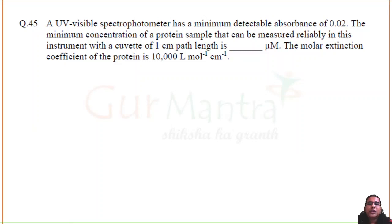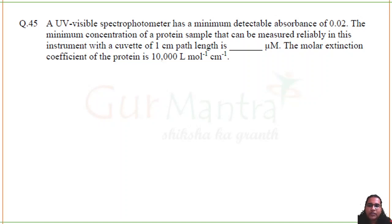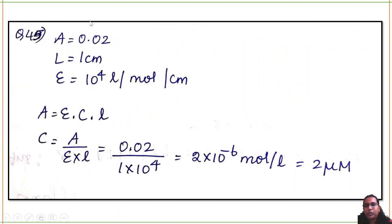Twenty-third question: a UV-visible spectrometer has a minimum detectable absorbance value A given. Path length = 1 cm, molar extinction coefficient = 10,000 L/mol/cm. Using Beer-Lambert law A = ε·c·l, substitute values and solve for concentration C in micromoles.